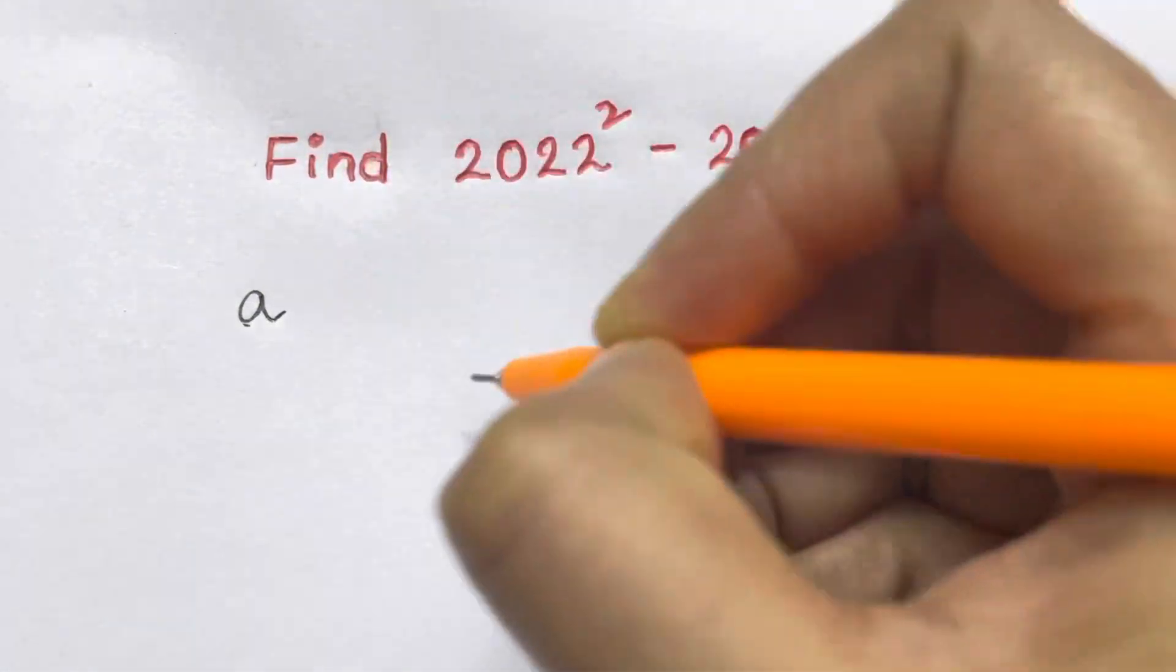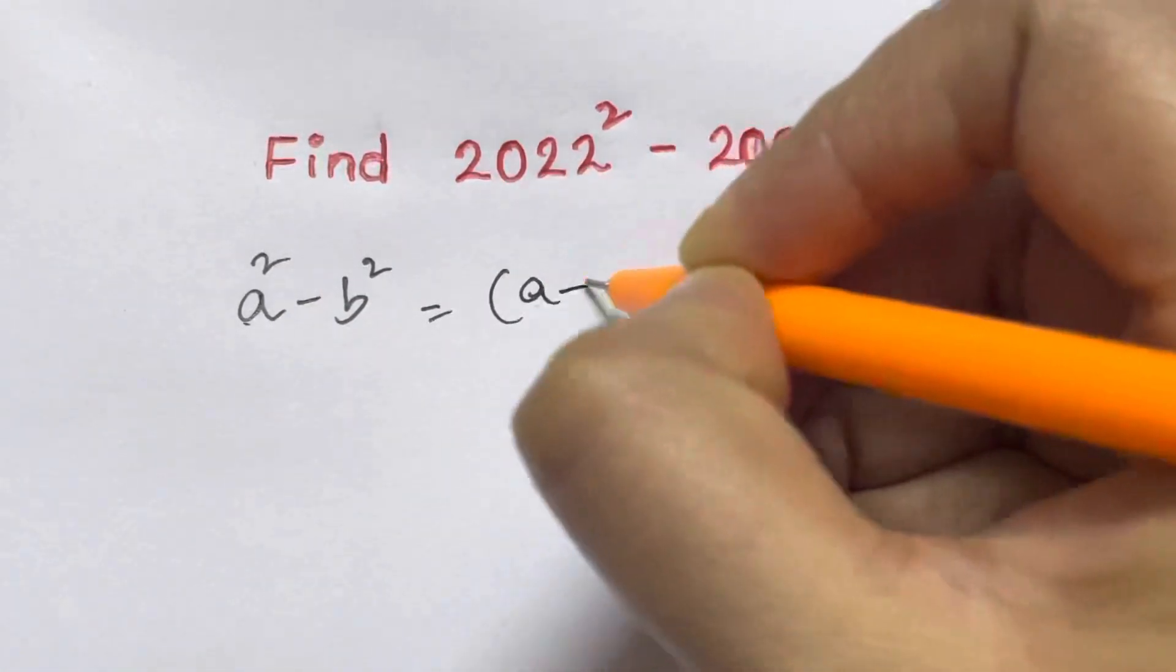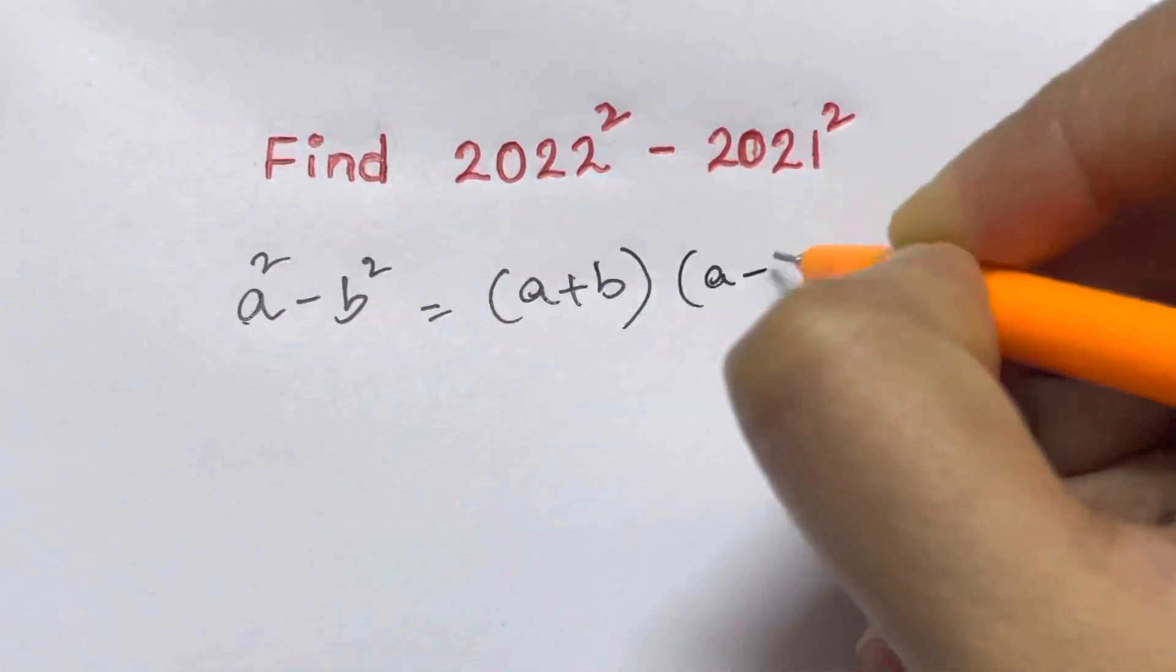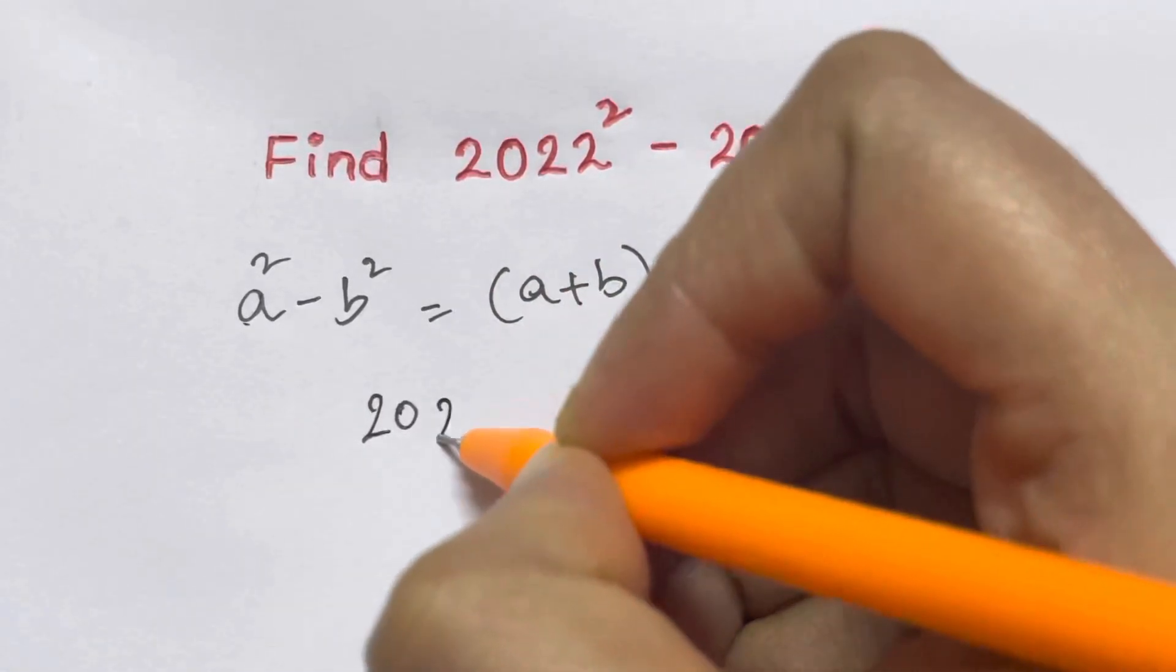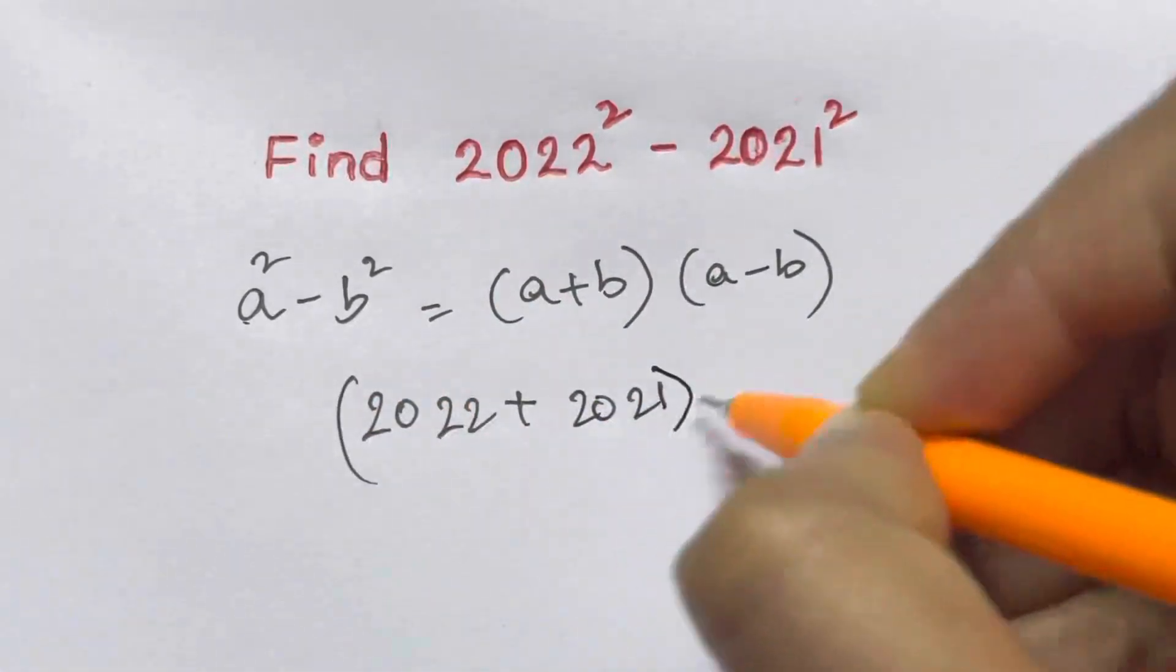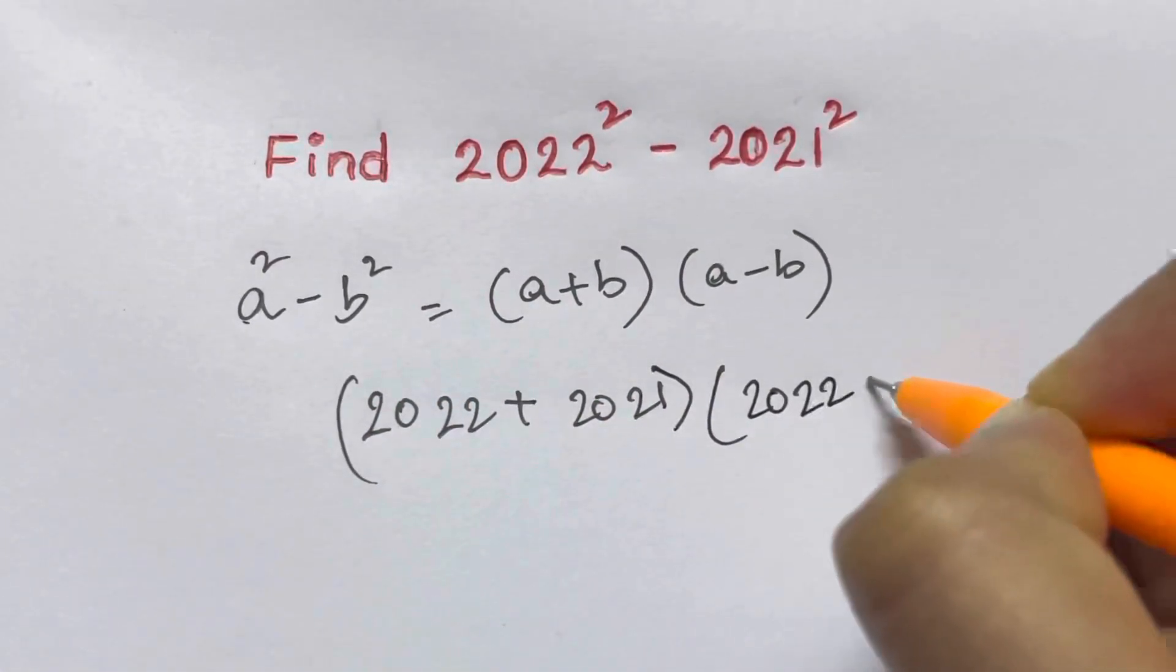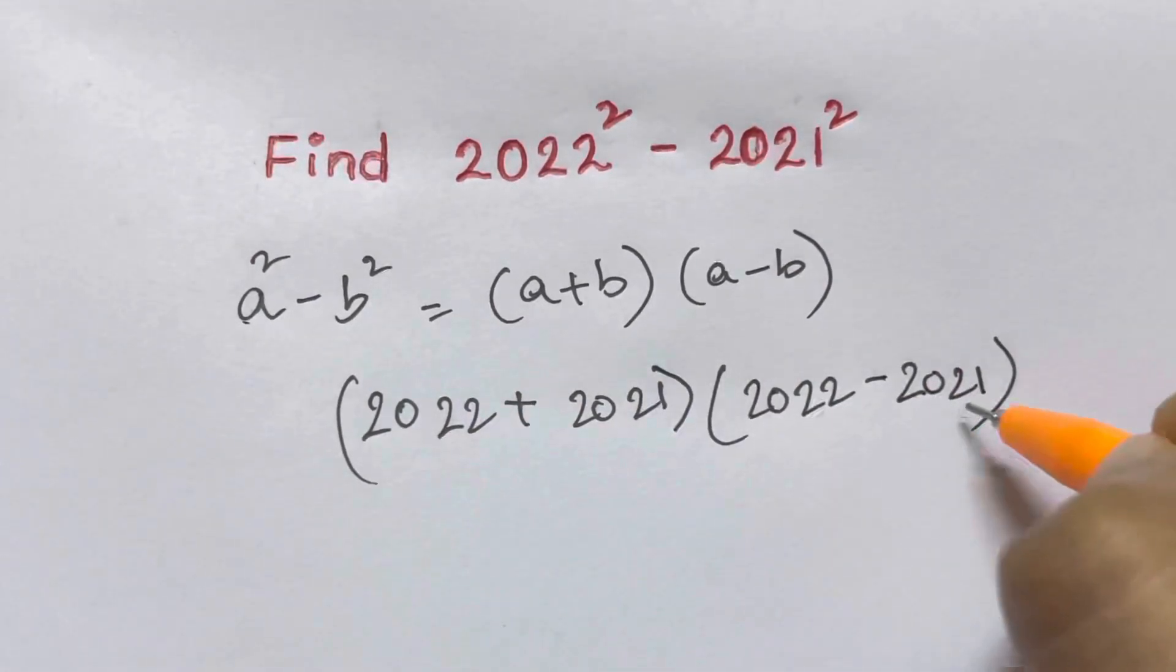So that is, as you might have known, a square minus b square is a plus b times a minus b. So you can just write down that is 2022 plus 2021 times 2022 minus 2021.